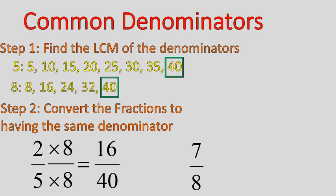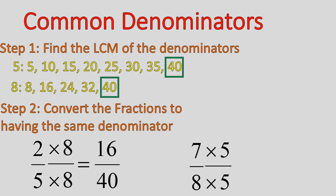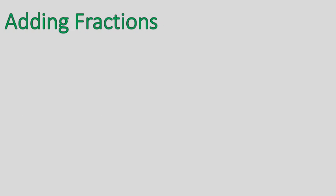Now I look at my second fraction, 7 eighths, and ask: the denominator 8 times what gives me 40? Well, 8 times 5 is 40. So to keep it a balanced and equal fraction, I multiply both the top and bottom times 5, and that gives me 35 over 40. This process of converting fractions so that you have the same denominator is the hardest math part of this lesson.